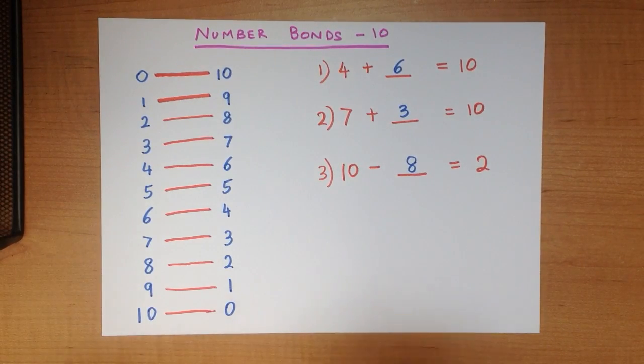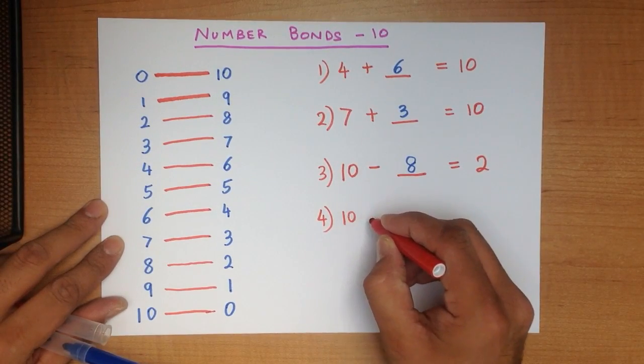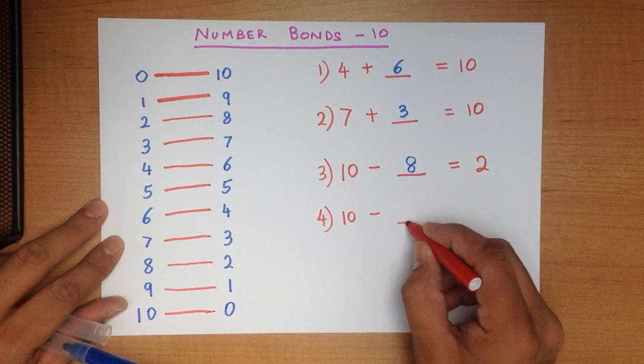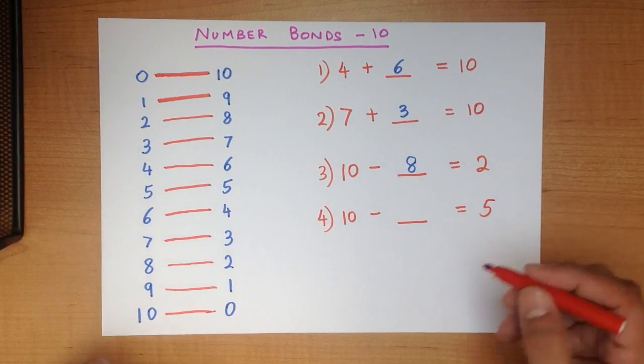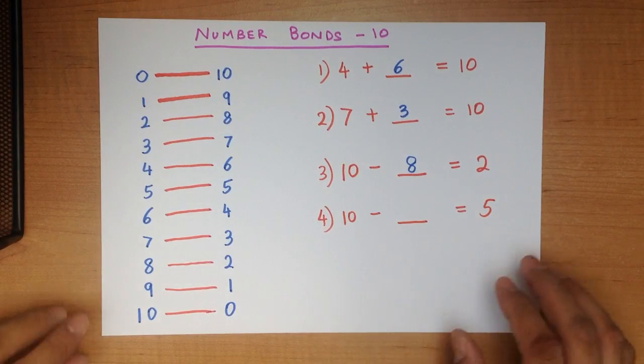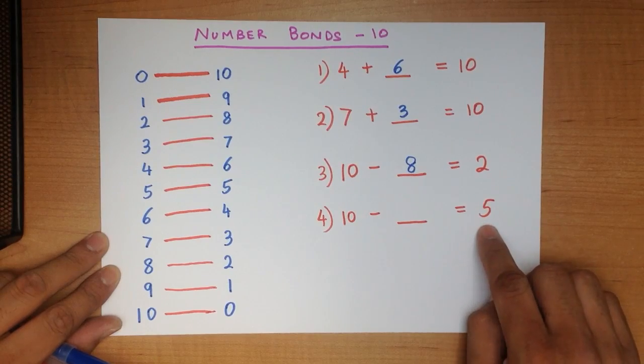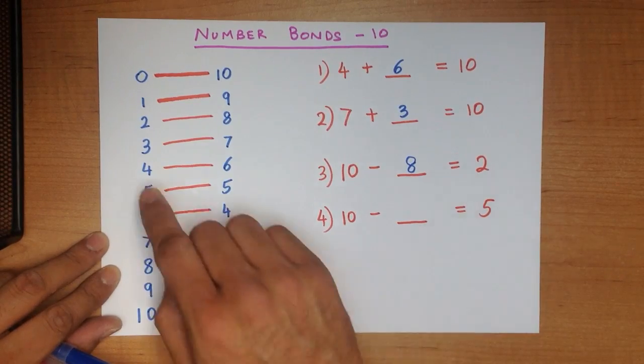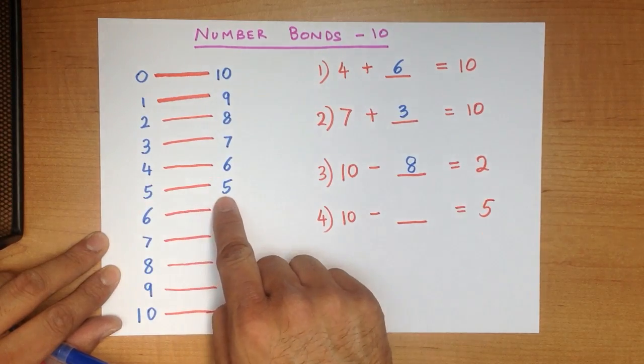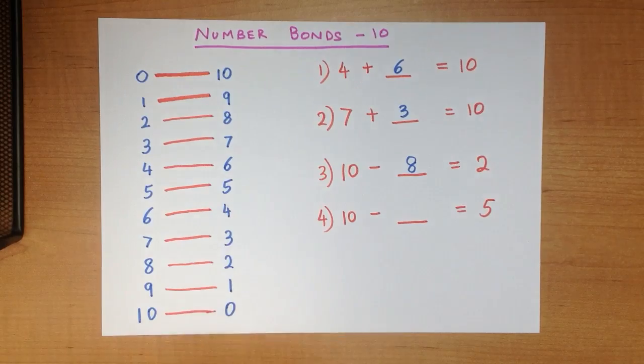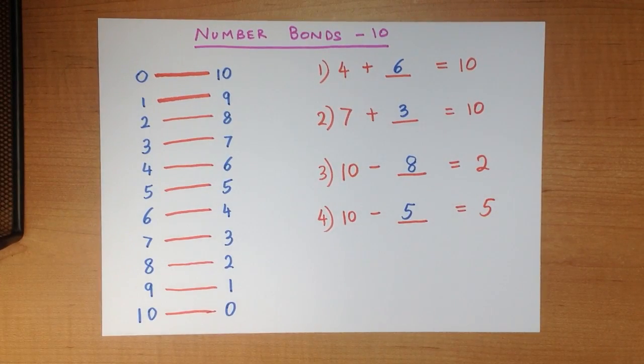Let's try one more. 10 minus something equals 5. Do you remember what we have to do? Look at the last number there, 5. We go all the way down and there it is. We go across and it is 5. 10 minus 5 equals 5.